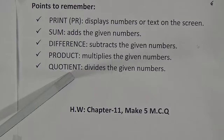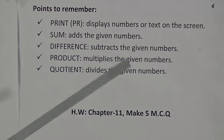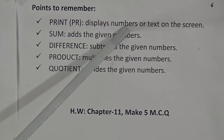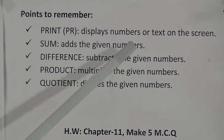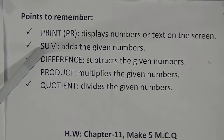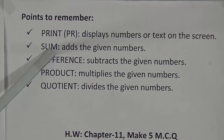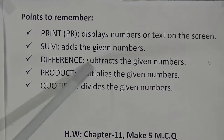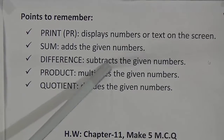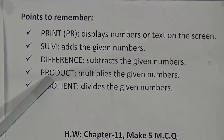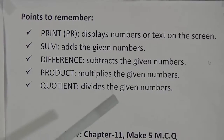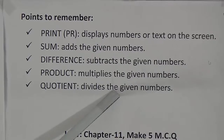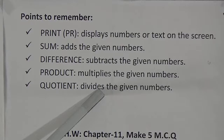Points to remember: PR (print) — displays numbers or text on the screen. SUM — adds the given numbers. DIFFERENCE — subtracts the given numbers. PRODUCT — multiplies the given numbers. QUOTIENT — divides the given numbers.